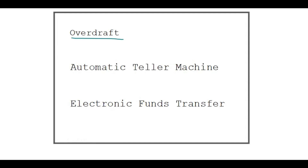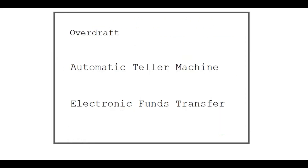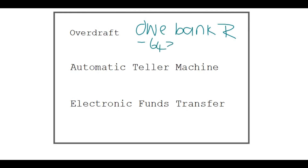An overdraft is when you owe the bank money — that's the 6,000 in the opening balance. You didn't have enough in your account, so they paid something for you, and now you have to pay them back that negative 6,482.20. Your account is then overdrawn — it's kind of like a loan from the bank.